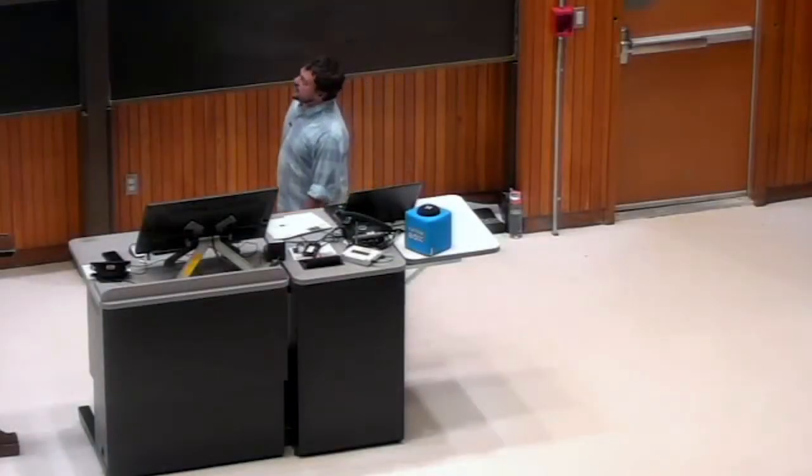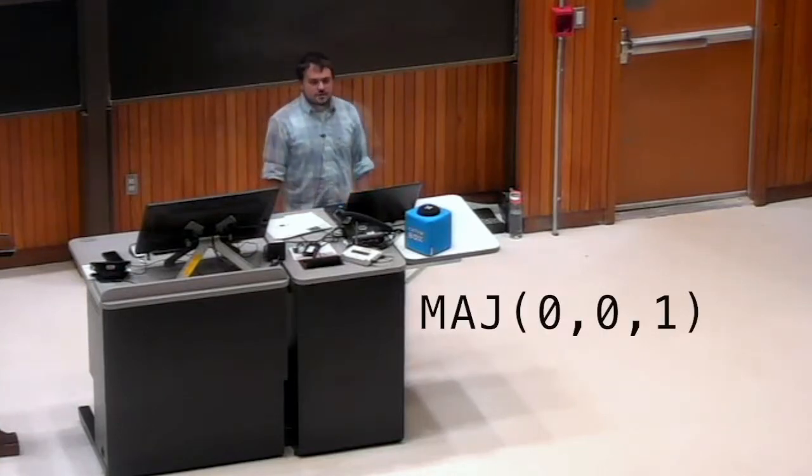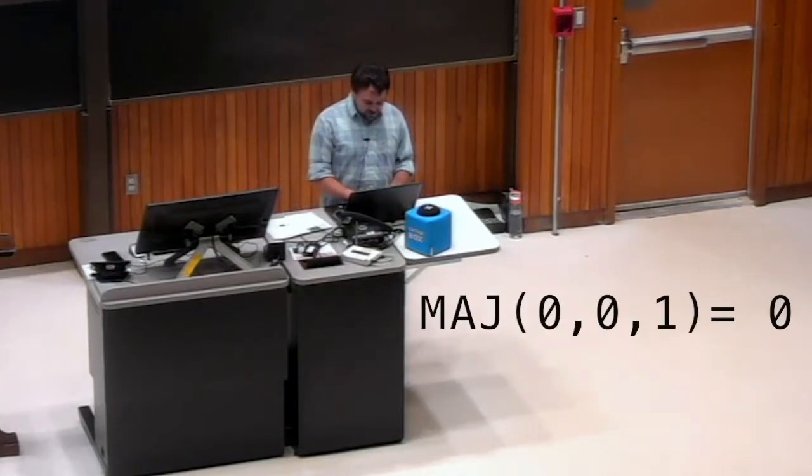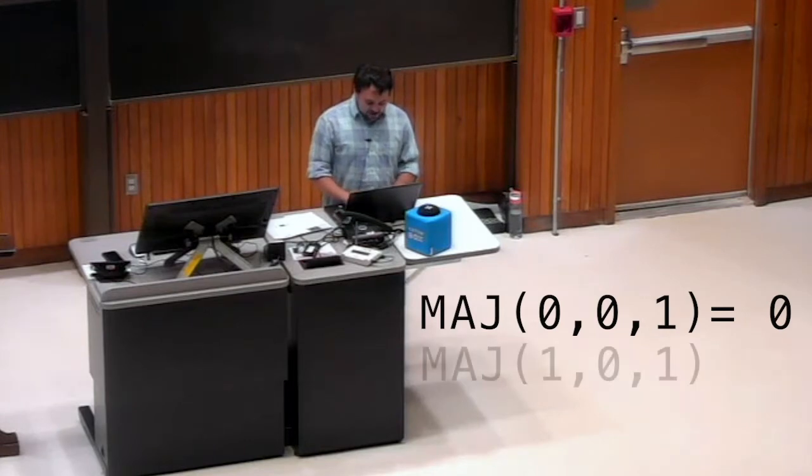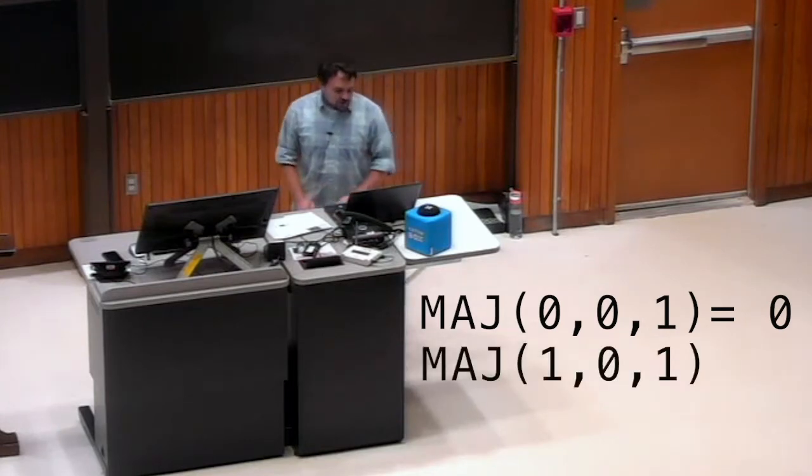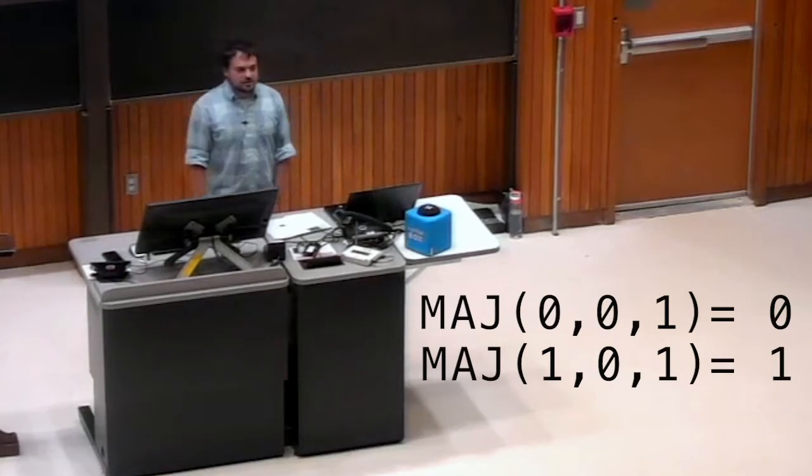What should be the answer of majority on 001? The answer should be zero, and then for 101, since we have two ones, that answer ought to be one. The majority of those are a one.